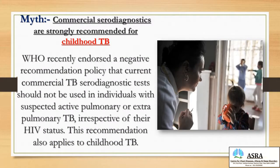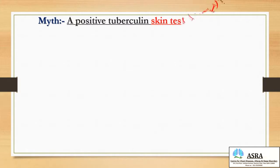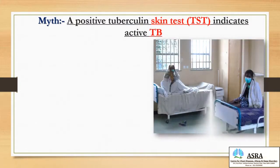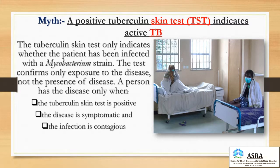WHO recently endorsed a recommendation that current commercial TB serodiagnostic tests should not be used in individuals with suspected active pulmonary or extra-pulmonary TB, irrespective of their HIV status. This recommendation also applies to childhood tuberculosis. The tuberculin skin test only indicates whether the patient has been infected with a Mycobacterium strain — it confirms only exposure to the disease, not its presence. A person has the disease only when the tuberculosis skin test is positive, the disease is symptomatic, and the infection is contagious.